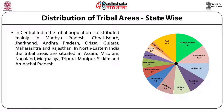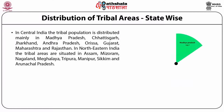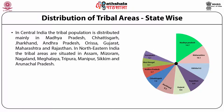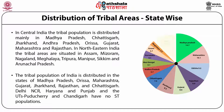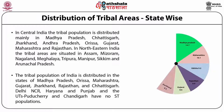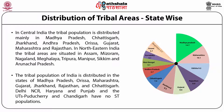In the northeast part of India, the tribal areas are situated in the states of Assam, Mizoram, Nagaland, Meghalaya, Tripura, Manipur, Sikkim and Arunachal Pradesh. It is also seen that the tribal population of India is largely distributed in the states of Madhya Pradesh, Odisha, Maharashtra, Gujarat, Jharkhand, Rajasthan and Chhattisgarh. But in Delhi NCR, Haryana and Punjab, and the UTs of Puducherry and Chandigarh, these are the states that have no ST populations.